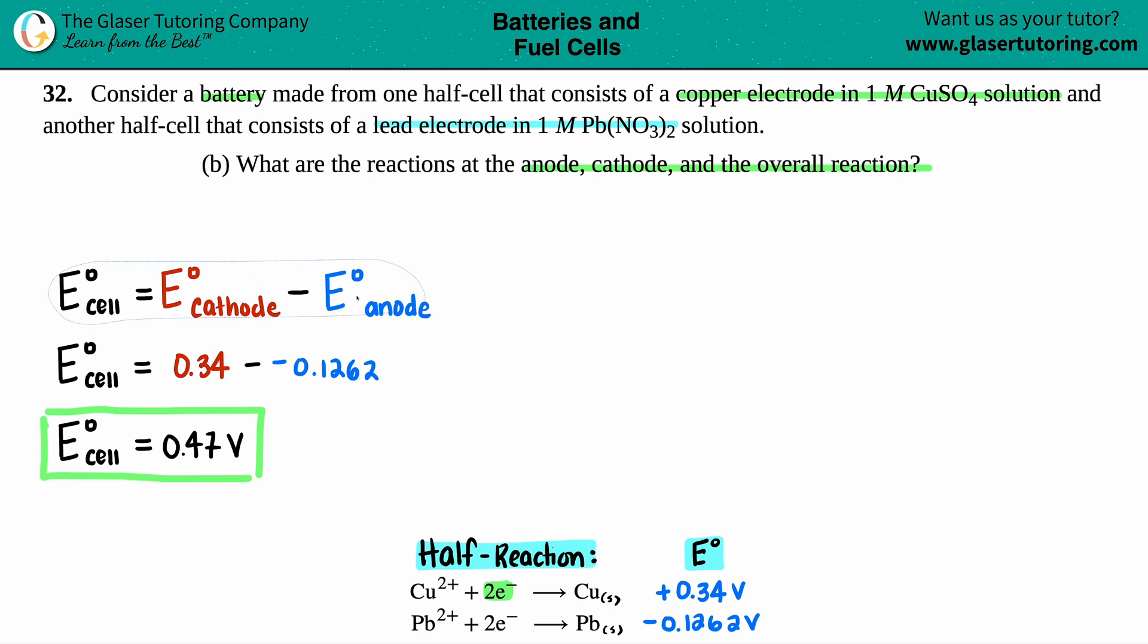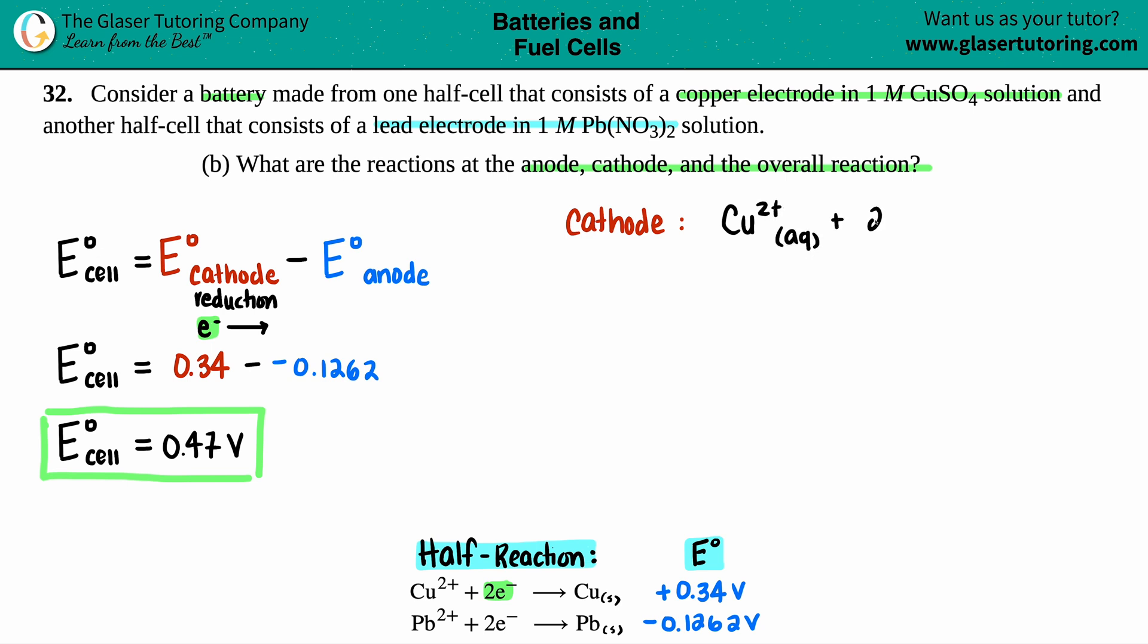If I just maybe move this up a little bit, the cathode, since that's reduction, you're always gaining electrons. That means that the electrons are always going to be on the left side of your equation. And that's exactly what this is showing me. So maybe I'll put cathode is the copper one. So we have Cu2+, that's aqueous, plus the two electrons, and that will yield the copper solid.